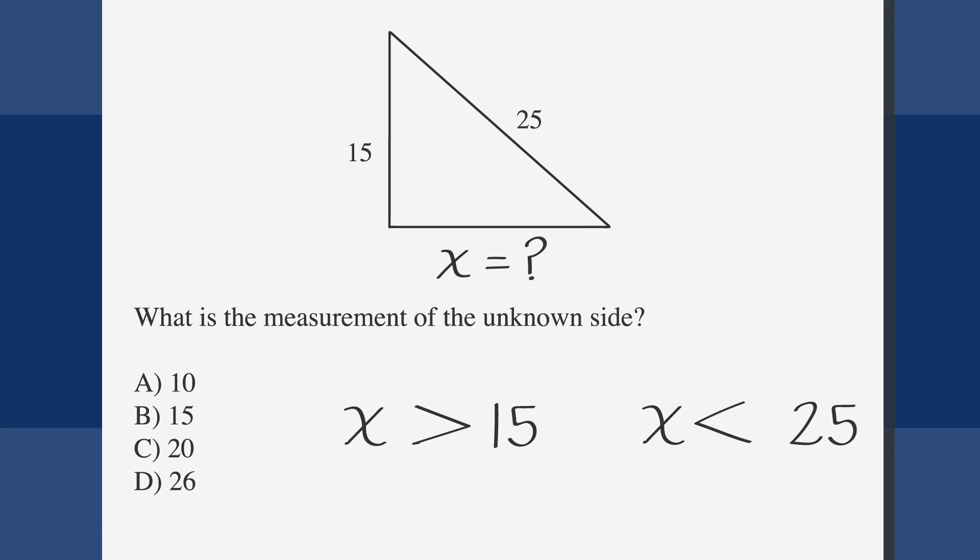Looking at our answer choices, we can get rid of anything that isn't in that range. Answer choice A, 10, is less than our lower number, so we can eliminate that. Answer choice B is exactly 15, instead of between 15 and 25, so we can cross that one out as well. Answer choice C is 20, which is directly between our two numbers. Let's hang on to this one.